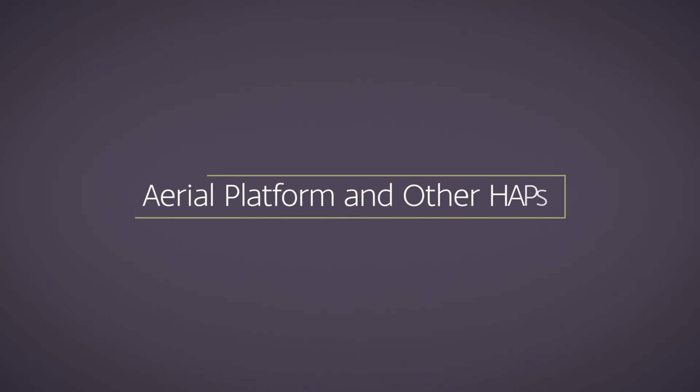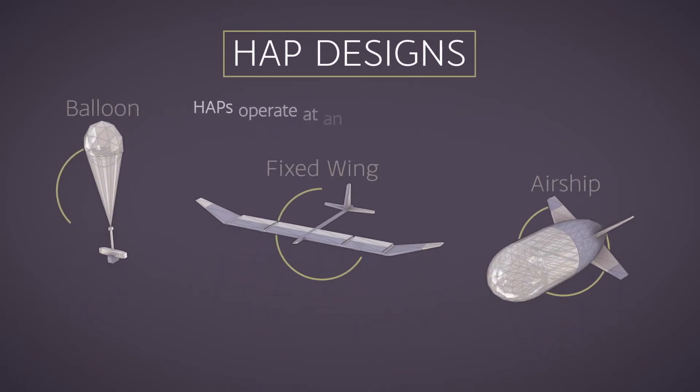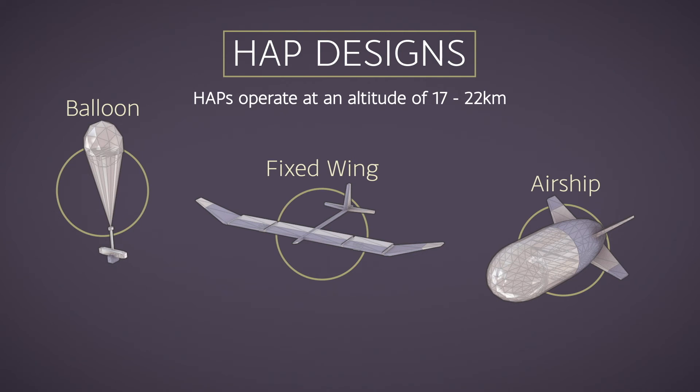Let's take a detailed look at the different types of aerial and hap platform. HAPs are aircraft and airships situated at an altitude of 17 to 22 km. They are often quasi-stationary, capable of providing regional coverage.